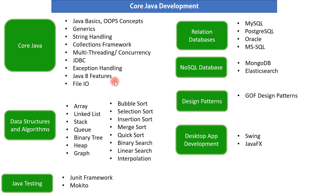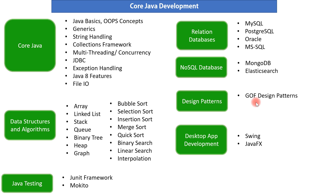Next are relational databases and NoSQL databases. As a Java developer you should have a good understanding of databases. Commonly used relational databases include MySQL, PostgreSQL, Oracle, and MS SQL Server. For NoSQL databases, popular choices include MongoDB and Elasticsearch. There are also other NoSQL databases like CouchDB, Cassandra, and Solr.